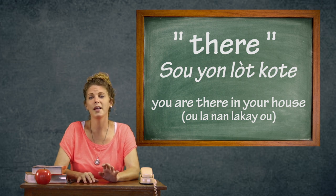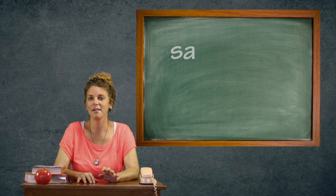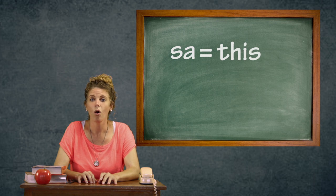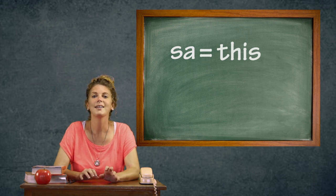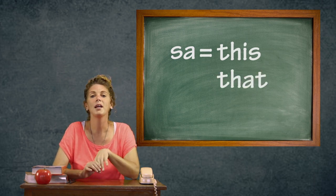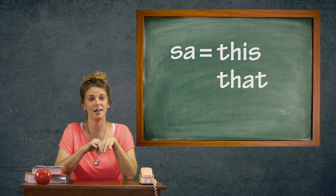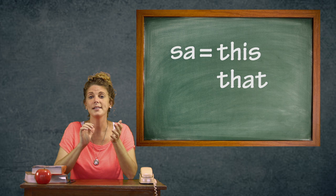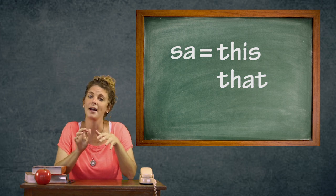Yon lòt mo ke ou gen nan kreyòl ki ka tradwi nan plizyè fason. Nou gen de mo diferan pou li. Sa ka di "this", ou swa, sa ka di "that". Epi gen yon diferan pou fason ou sevi ak yo. Di sa avèk mwen: this, that.